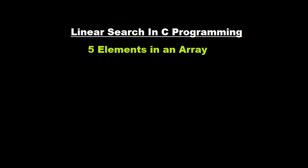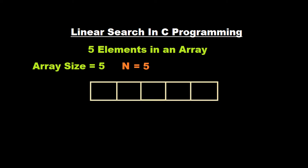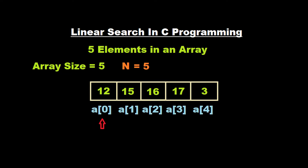Let us take 5 elements in an array. The array size will be 5, so this gives us our first variable which is n, and in this case n is equal to 5. Let me take the elements as 12, 15, 16, 17, and 3. These elements will take up the indices A[0], A[1], A[2], A[3], and A[4]. Since indexing starts from 0 and there are 5 elements, it starts from 0 and ends at 4. So A[0] will be 12 and the last element A[4] will be 3.